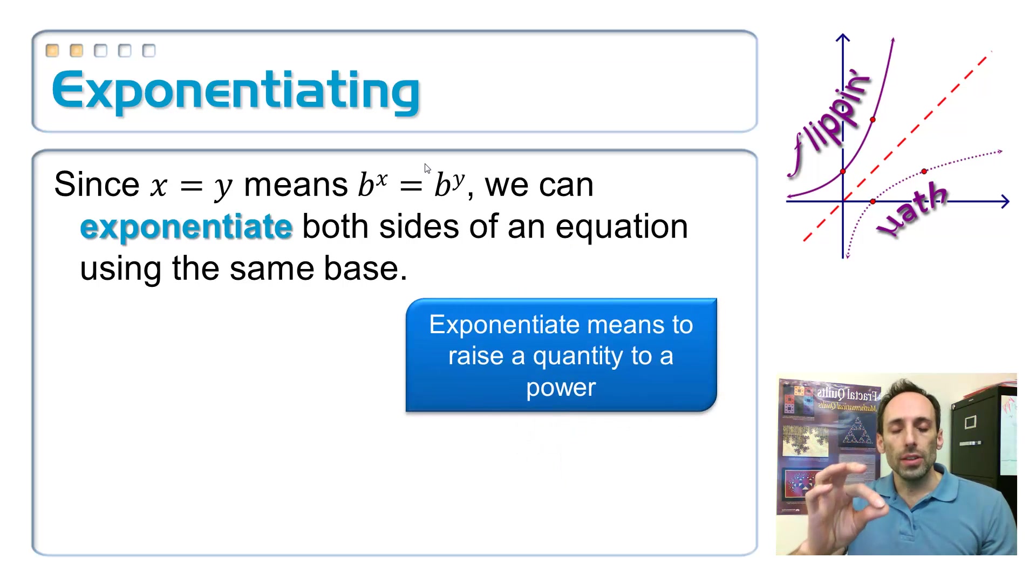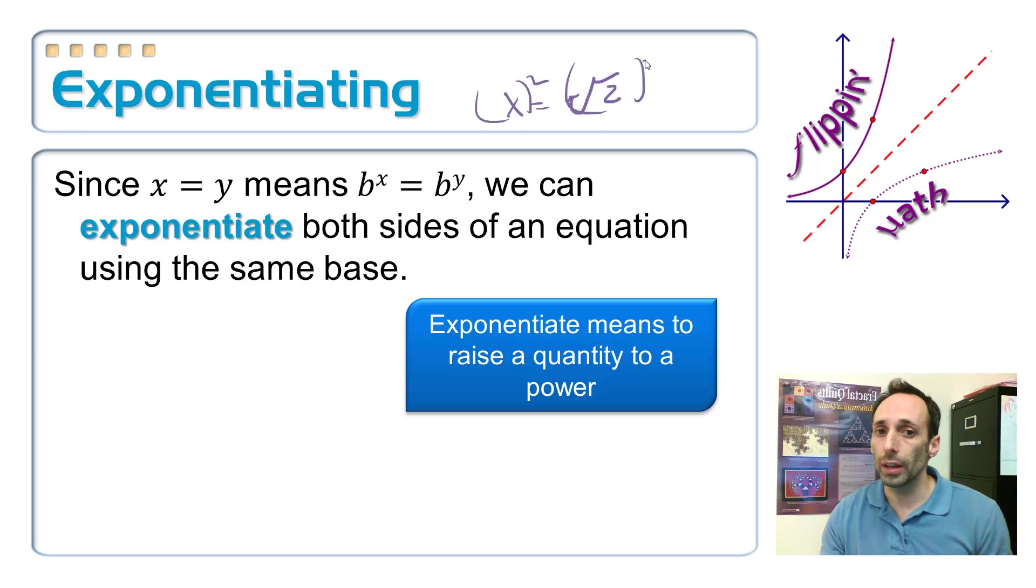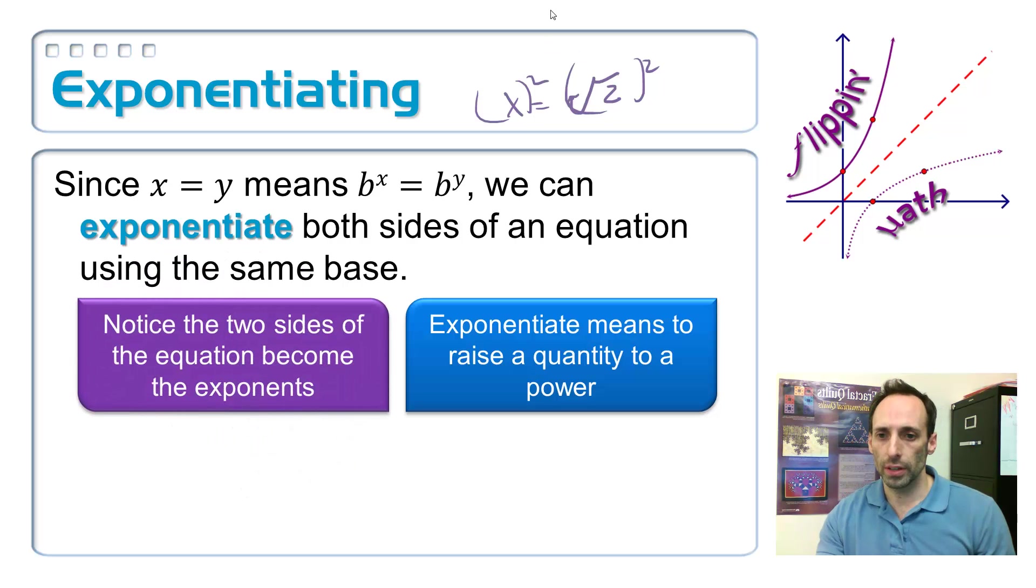So, raise a quantity to a power. That's what the word exponentiate means. Now, let me be clear about this. Squaring both sides, if I have x is equal to the square root of 2, squaring both sides is not exponentiating. What exponentiating is, the two sides of the equation become the exponents.